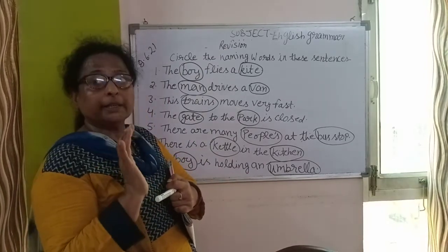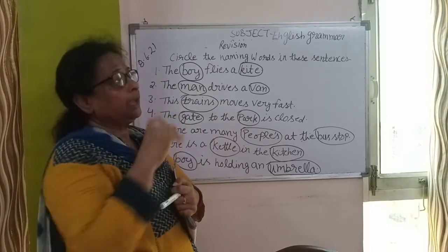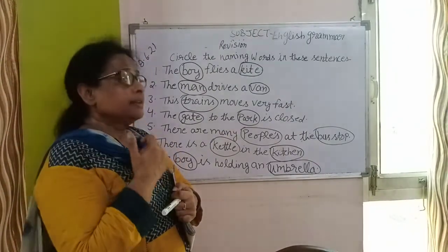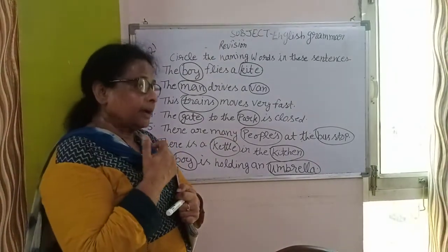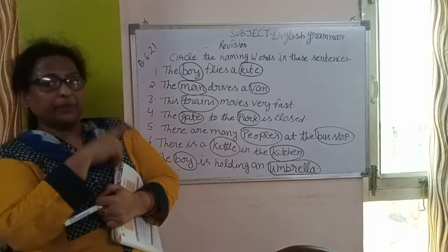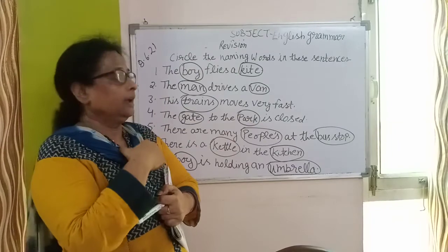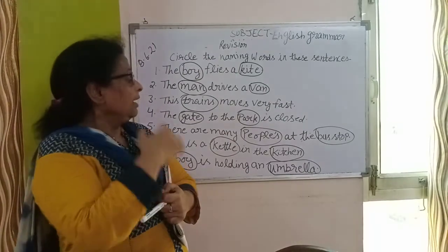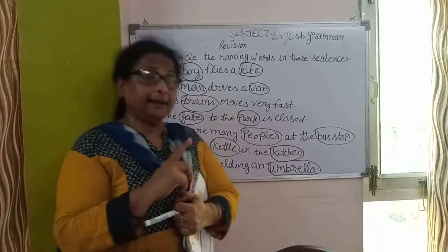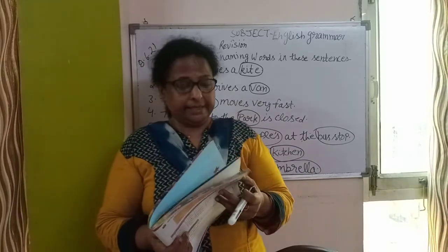सब बच्चों को बहुत अच्छे से समझ आई है. हमें यह sentences में जो naming words हैं, उनको circle करना है. The boy flies a kite — इसमें boy और kite को circle करना है. Do you understand? Please learn it at your home and practice it also. Thank you and have a nice day.